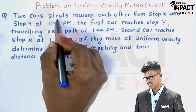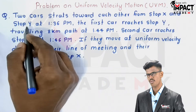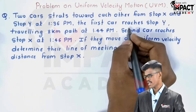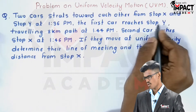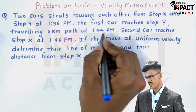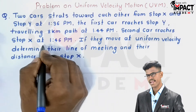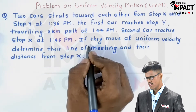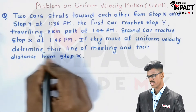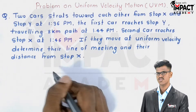Here's the question. Two cars started towards each other from stop X and stop Y at 1:36 PM. The first car reaches stop Y, traveling an 8 km path, at 1:44 PM. The second car reaches stop X at 1:46 PM. If they move at uniform velocity, determine their line of meeting and their distance from stop X.